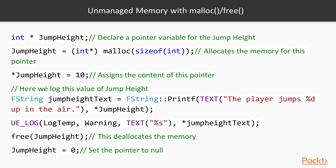First, in the first line, we declare our pointer variable called jump_height by typing int* jump_height. The star symbol here is the symbol for a pointer variable. In the second line, we are allocating the memory for this pointer. We call the malloc function, which takes the size in bytes of the amount we want to create. We pass sizeof(int) as a parameter to malloc, and then we cast the allocated memory into an int pointer — you can see the int pointer inside the parentheses. That casts the allocated memory to be an int pointer, and we assign that to jump_height. To work with the content of the jump_height pointer variable, we utilize the dereferencing symbol, the star symbol again. So we type *jump_height = 10, which places the value 10 into the content of jump_height.